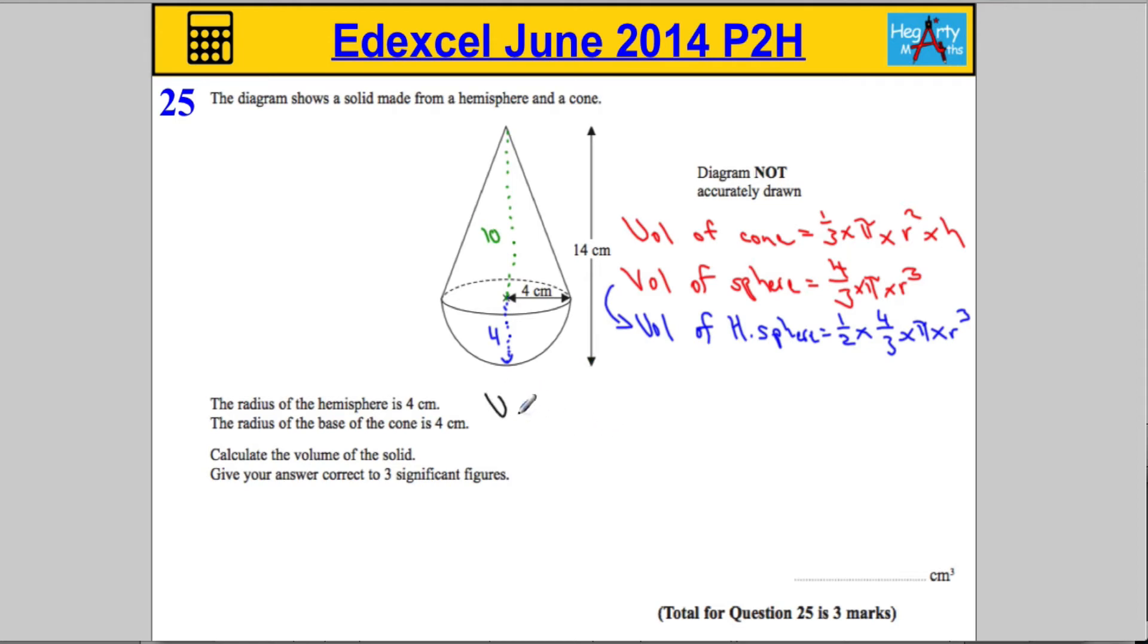The volume of the shape is going to be 1 third times pi times the radius squared. The radius is 4, so times 4 squared times by the height of the cone, which is 10. And I'm going to have to add to that the volume of the hemisphere.